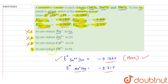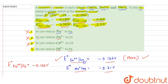In option D, it is given that tin can reduce Pb2+ to Pb. The reduction potential of lead is minus 0.126 V, which is more than the reduction potential of tin (minus 0.136 V). So the tendency to get reduced is more in lead compared to tin. Therefore, tin can reduce lead — this is correct. Option D is the correct answer.